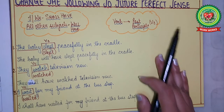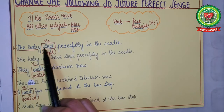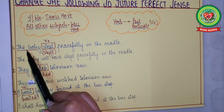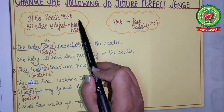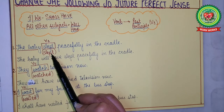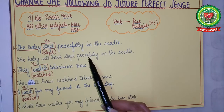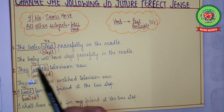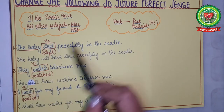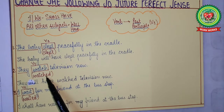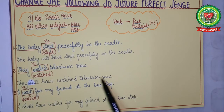Let us work through the examples. 'The baby slept peacefully in the cradle.' Subject: the baby — will have. Slept stays slept (V3). Answer: The baby will have slept peacefully in the cradle. 'They watch television now.' Subject: they — will have. Watch changes to watched. Answer: They will have watched television now.